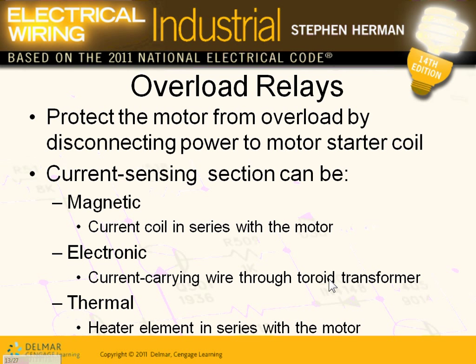Unfortunately we don't do the control here in this class. Different types of overloads: the cheapest, easiest way is a heater. You let the current go through a heater, it heats up, and physically and mechanically pushes two contacts open. The better one is the electronic overload — you can sense the current has gone from 50 amps to 150 amps and electronically make a decision to open, close, or alarm.